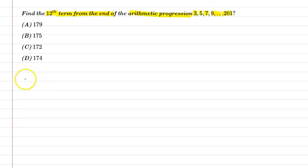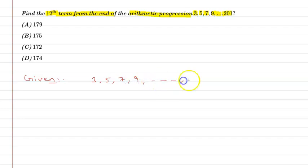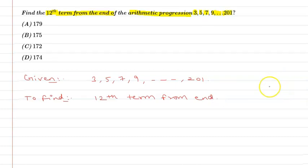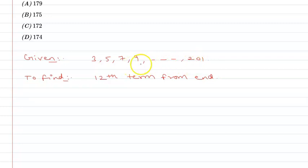So, what is given: the AP is 3, 5, 7, 9, and so on up to 201. And what do we need to do? We need to find the 12th term from the end.